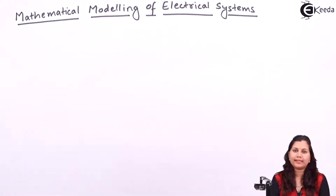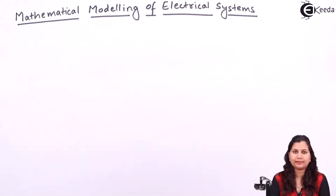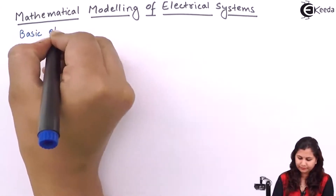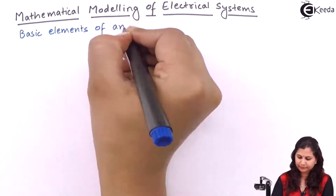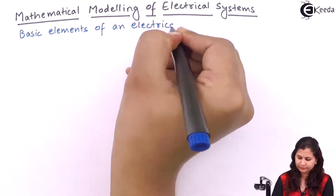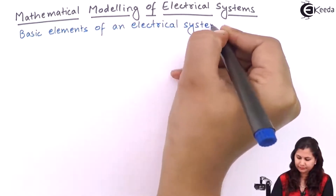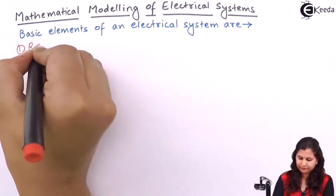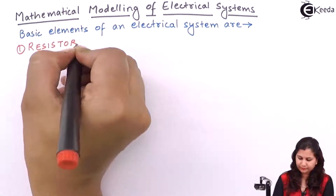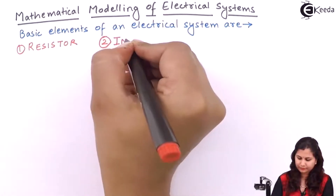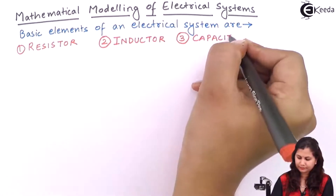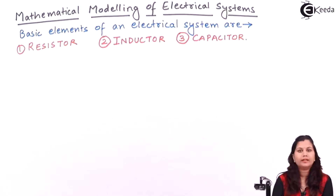The electrical systems consist of three basic elements: a resistor, inductor, and capacitor. Let us first study the first basic element of electrical systems.